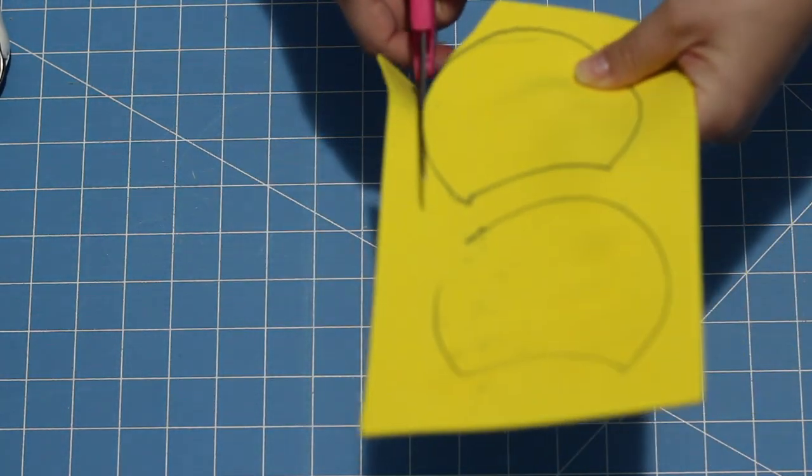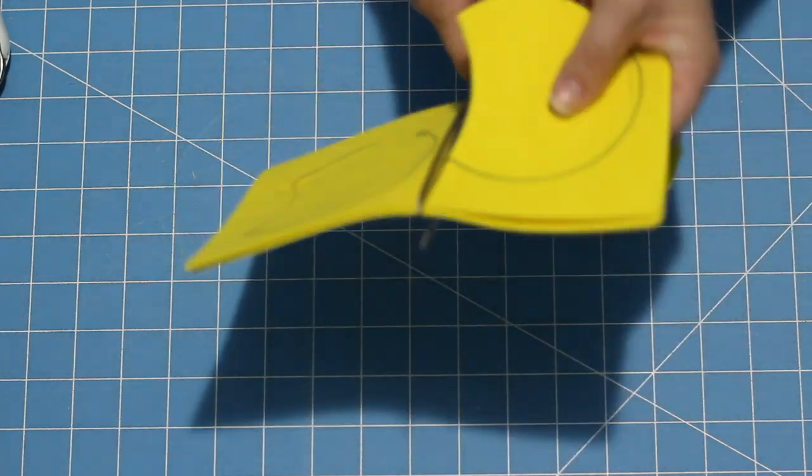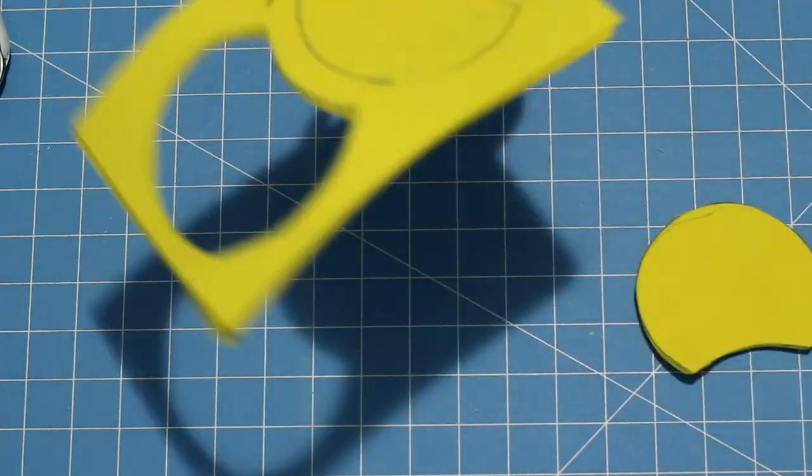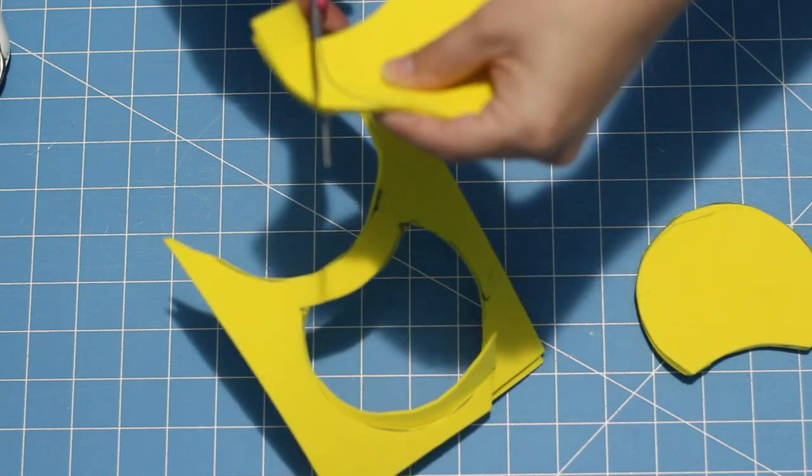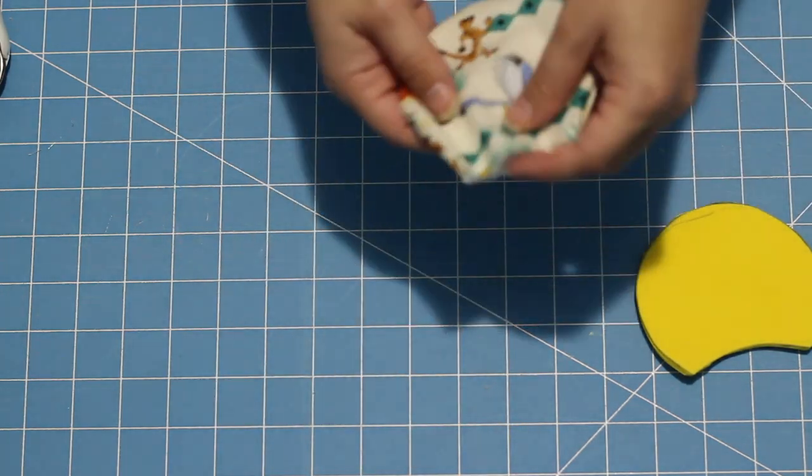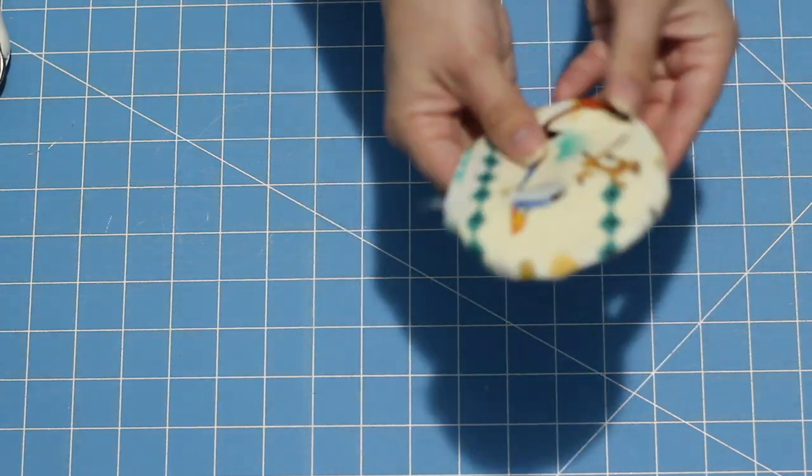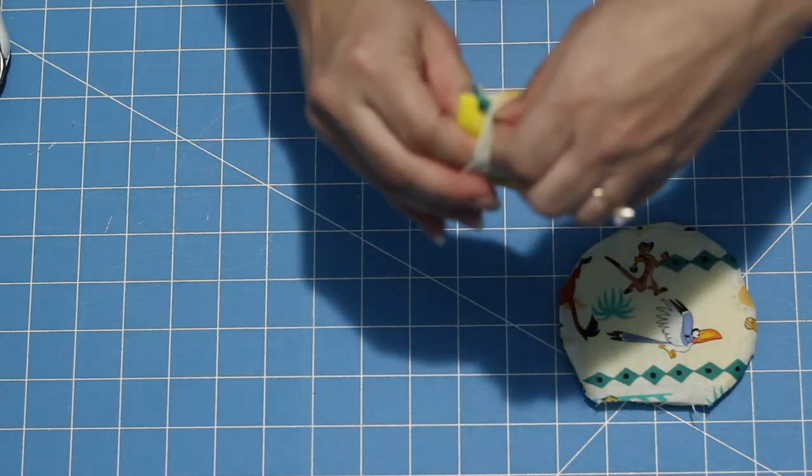You want to double them up because one singular piece of craft foam is not really thick enough to help the ear retain its shape, but this way you're still only cutting out two. Once you have both of these cut out, you're going to fold them kind of like a taco and place them inside of your ear once you have the fabric turned right side out, and that is going to help your ear retain its shape.